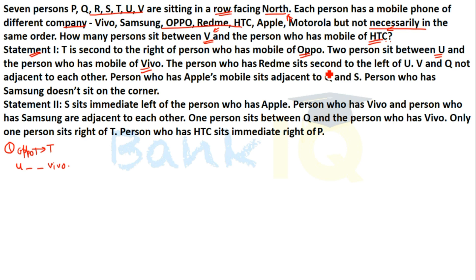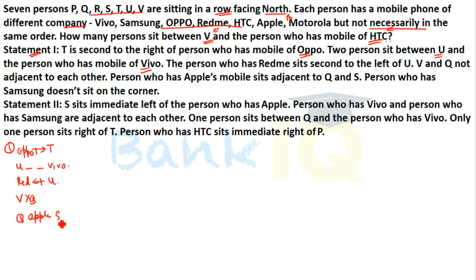The person who has Redmi sits second to the left of Q. We don't know which side Q is on. Also, the person who has Samsung doesn't sit at the corner.